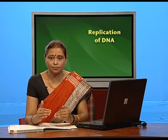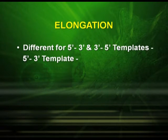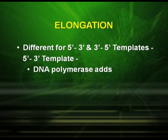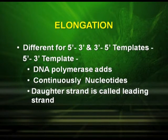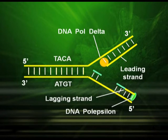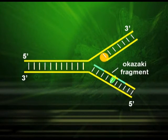Once initiation has taken place, the next step is elongation. This elongation process is different for the 5' to 3' and 3' to 5' template strands. On the 5' to 3' template, the enzyme DNA polymerase adds nucleotides continuously, and therefore this strand is called the leading strand — as clearly shown in the picture. On the other strand, there is a lagging strand where DNA nucleotides are added in fragments called Okazaki fragments.